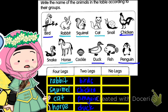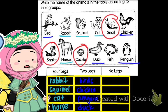Now no-leg animals. Snail, snake, cockle, and fish. Write them down here on the table — snail, snake, cockle, and fish. Okay, done.